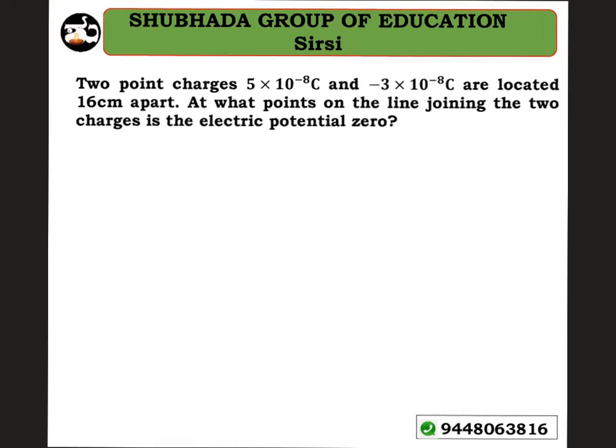The problem says that two point charges — 5 into 10 to the power of minus 8 coulomb and minus 3 into 10 to the power of minus 8 coulomb — are located 16 centimeters apart. At what points on the line joining the two charges is the electric potential zero?